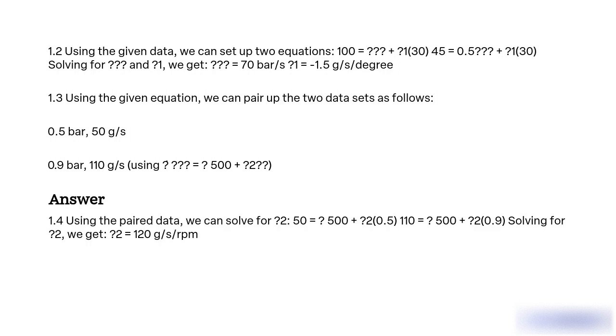1.4 Using the paired data, we can solve for [theta 2]. 50 equals [theta] 500 plus [theta 2] of 0.5. 110 equals [theta] 500 plus [theta 2] of 0.9. Solving for [theta 2], we get [theta 2] equal to 120 grams per second per rpm.